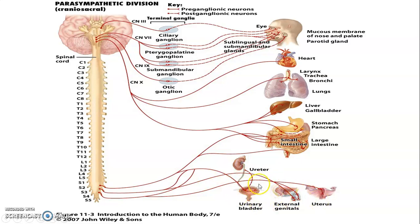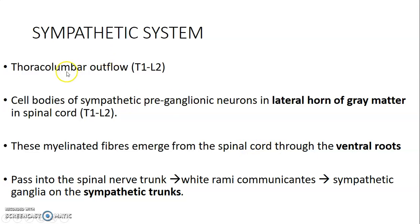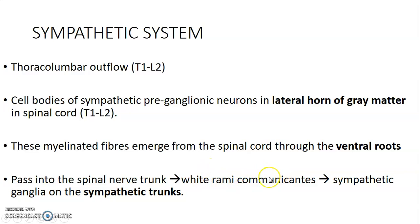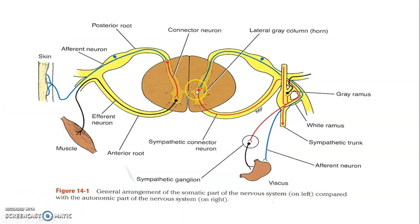Now we go to the sympathetic system. Remember, parasympathetic is craniosacral; sympathetic is thoracolumbar — from T1 to T12, also involving the upper lumbar L1 and L2. The cell bodies of sympathetic preganglionic neurons are within the lateral horn of the gray matter of the spinal cord within the T1 to L2 region. They emerge from the spinal cord, follow the ventral roots, enter the spinal nerve trunk, and the nerve trunk divides to form the white rami communicantes, through which the sympathetic fibers reach the sympathetic trunk.